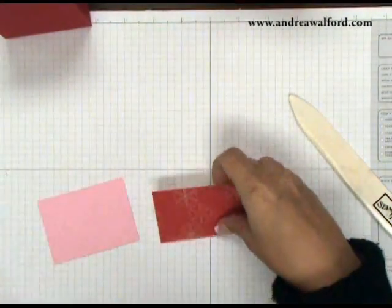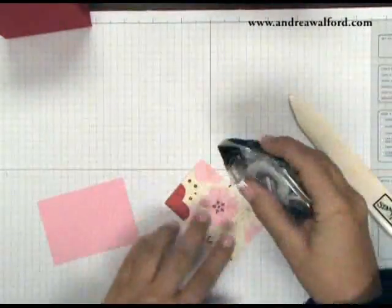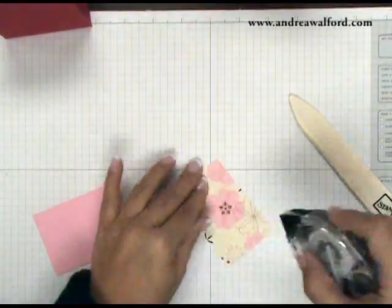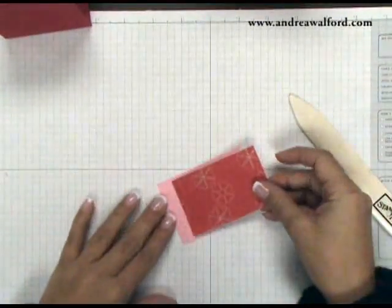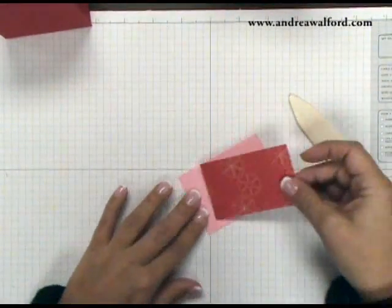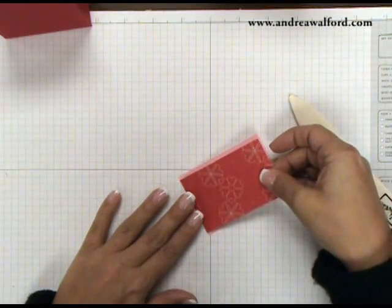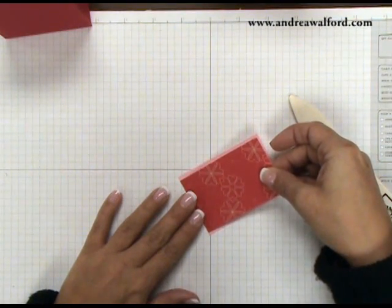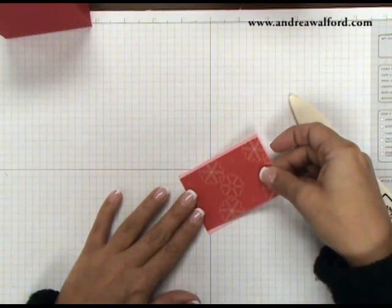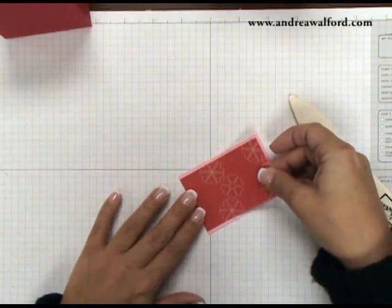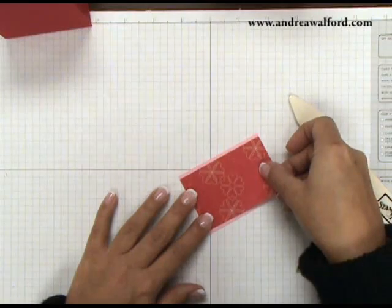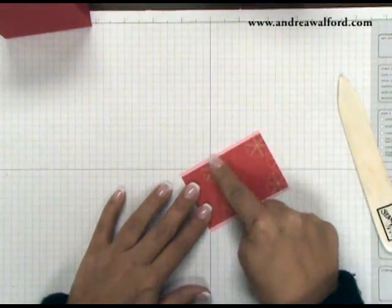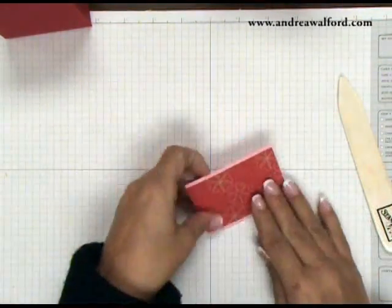This is from the Sending Love Specialty Designer Paper Collection and the Occasions Mini Catalog. And I'm going to put snail adhesive along the top and bottom edges and then I'm going to center and stick this onto a piece of Pretty in Pink cardstock. Now my designer paper is 2 inches by 3 1/8 of an inch and my Pretty in Pink cardstock is 2 1/4 inches high by 3 1/8 of an inch.